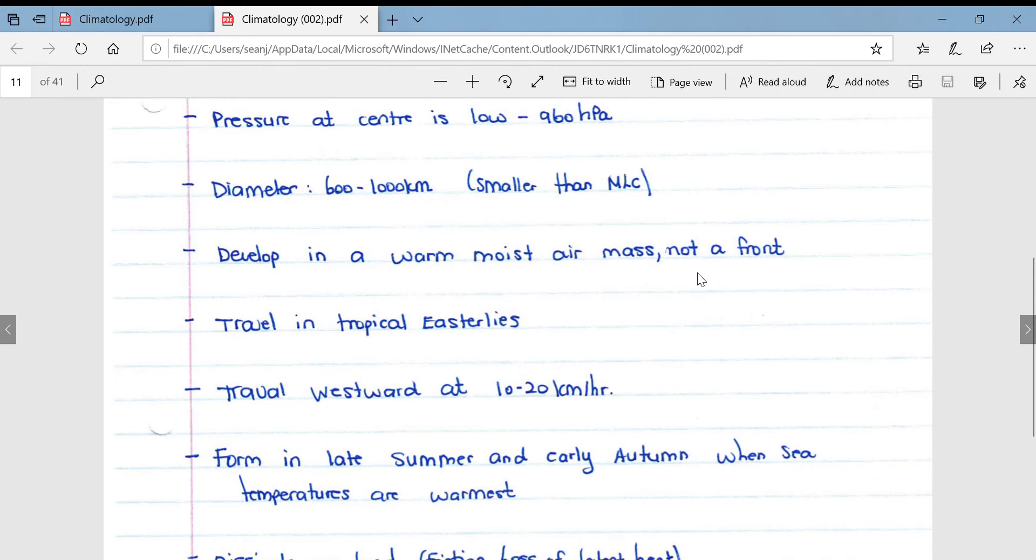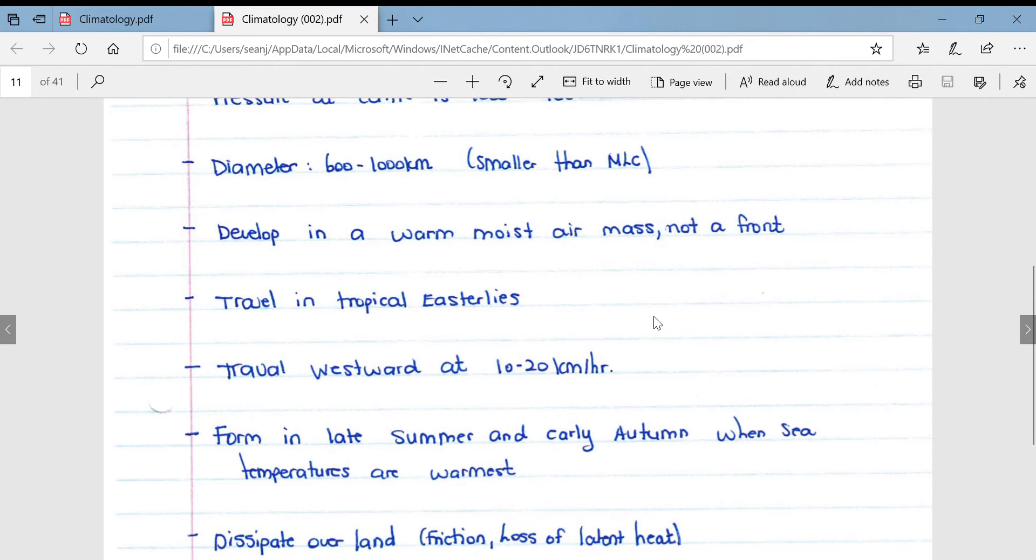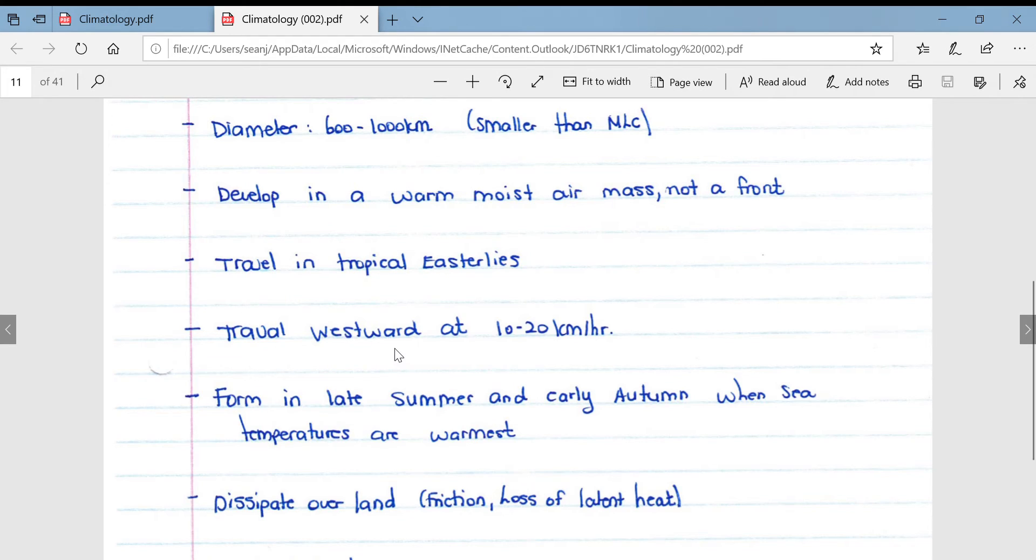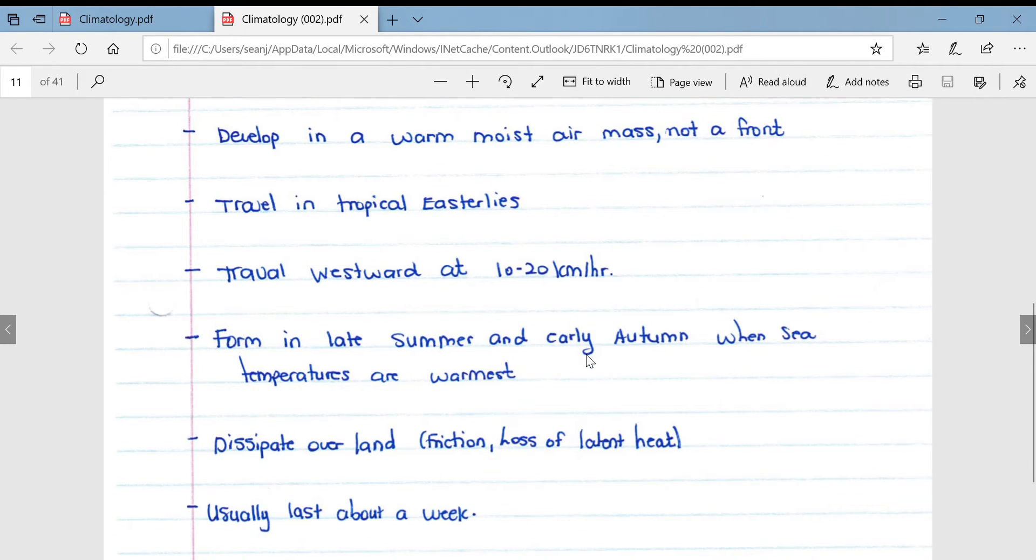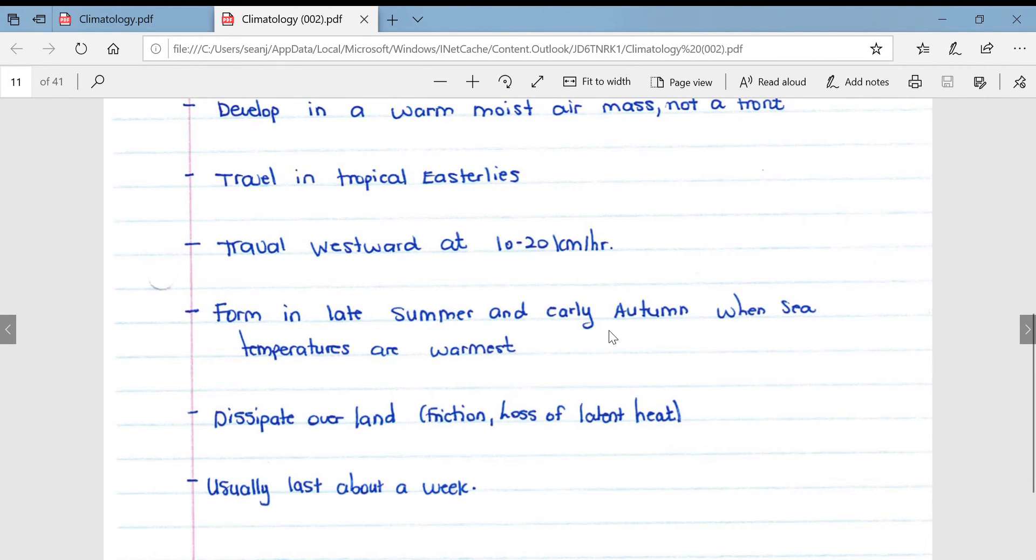They develop in a warm moist air mass and they are not associated with fronts, whereas mid-latitude cyclones are associated with fronts. They travel in the tropical easterlies, they travel westward, so they travel from east to west at between 10 and 20 kilometers per hour, so slightly slower than mid-latitude cyclones.